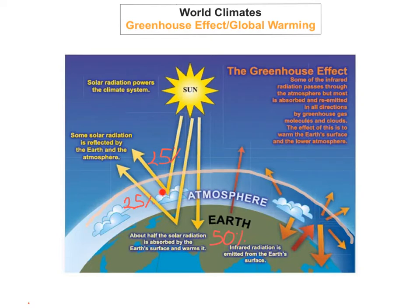And because of this, because our atmosphere is warmer, it's then causing our earth to heat up and to get warmer. And this is what we call the greenhouse effect, or what it's known as now — global warming, or even more recently, climate change, because it's causing the climate to change on the earth.